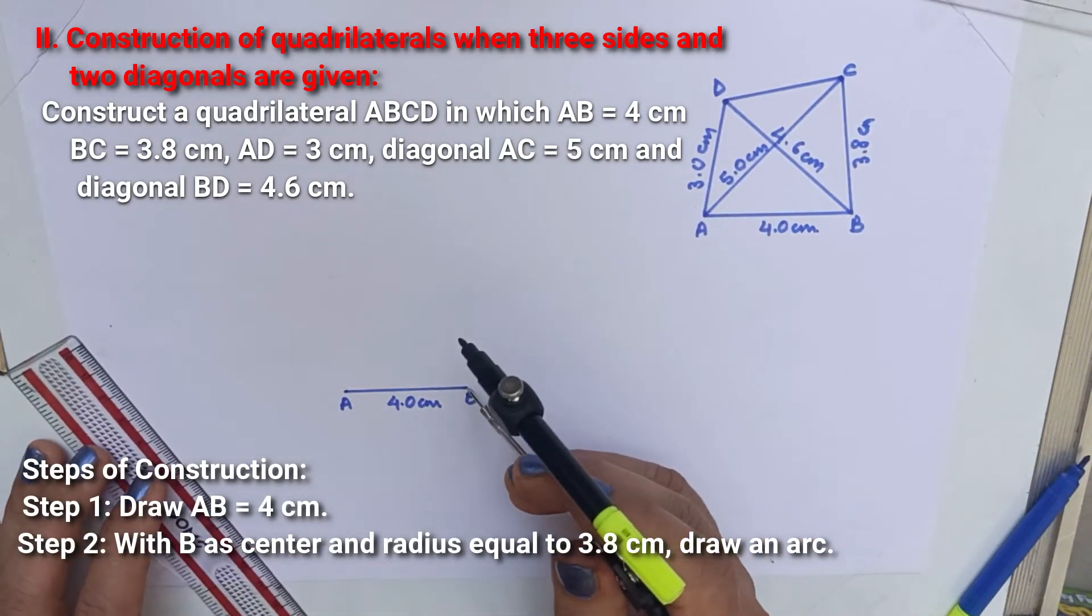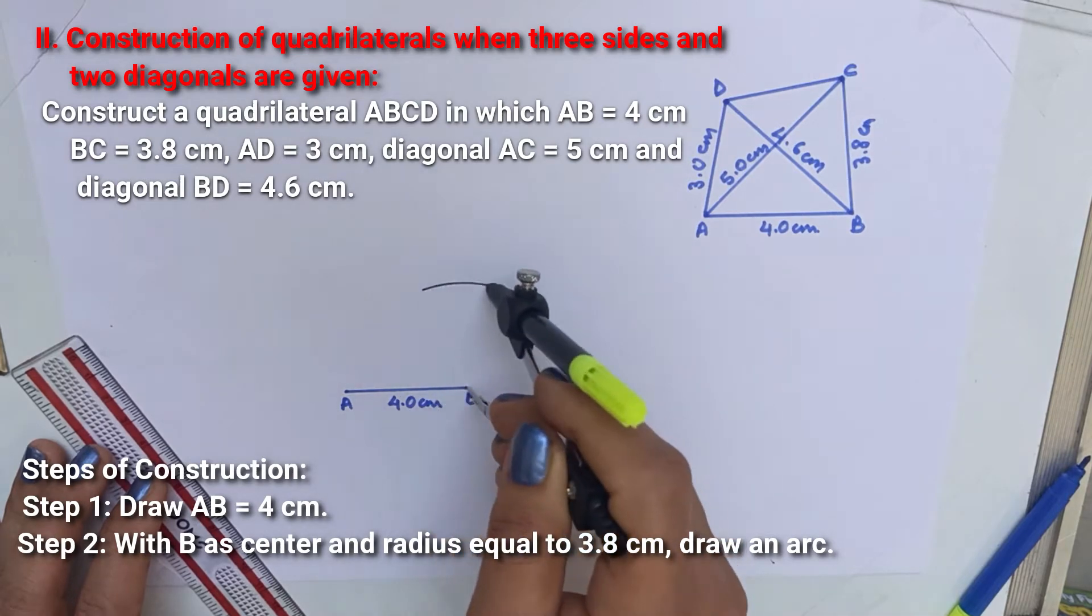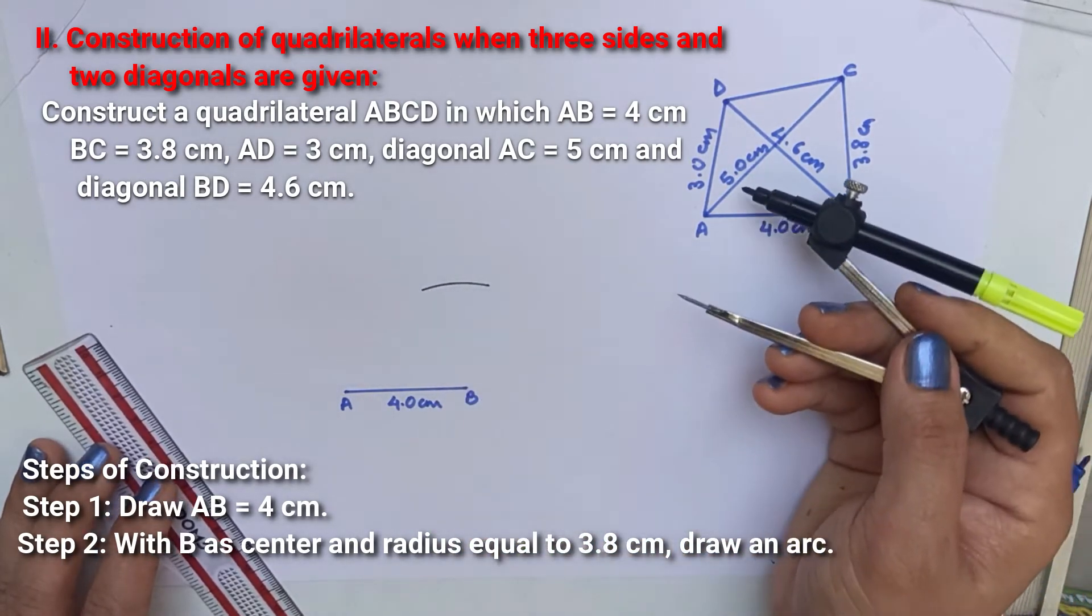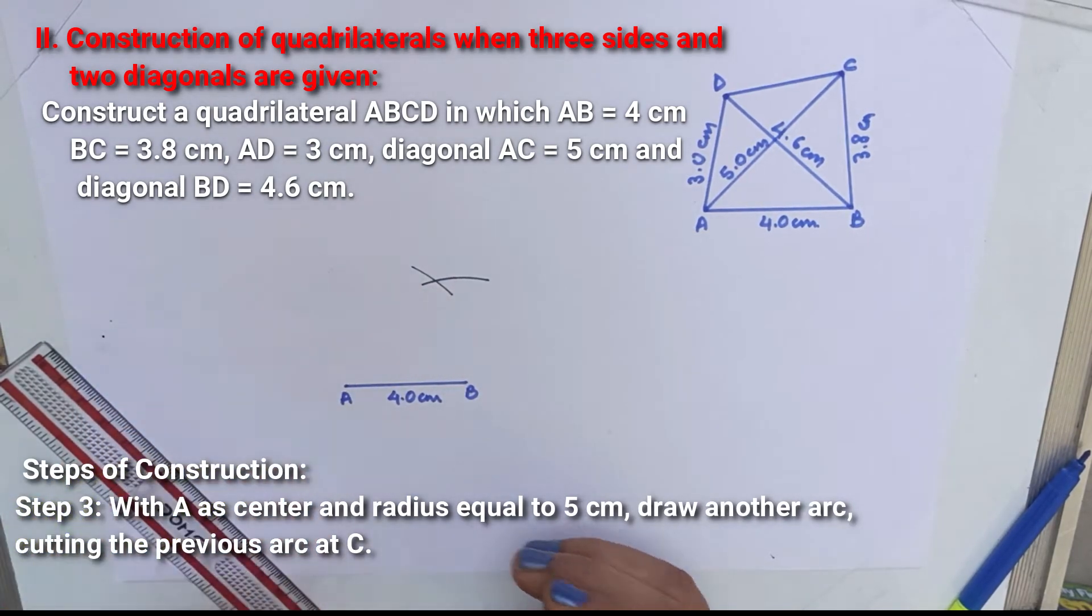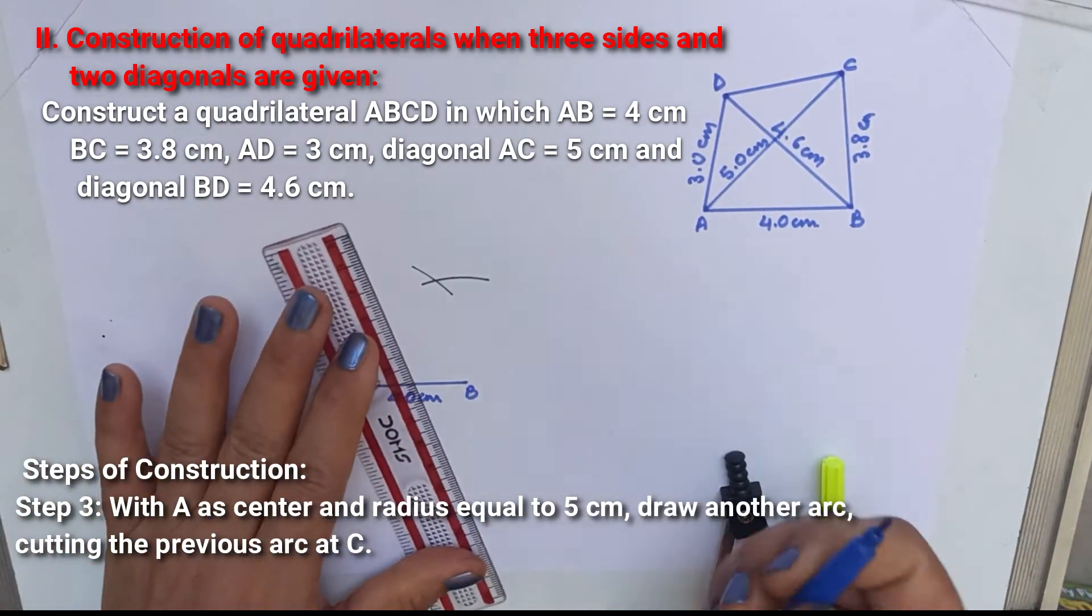With B as center and radius equal to 3.8 cm, draw an arc. With A as center and radius equal to 5 cm, draw another arc cutting the previous arc at C.